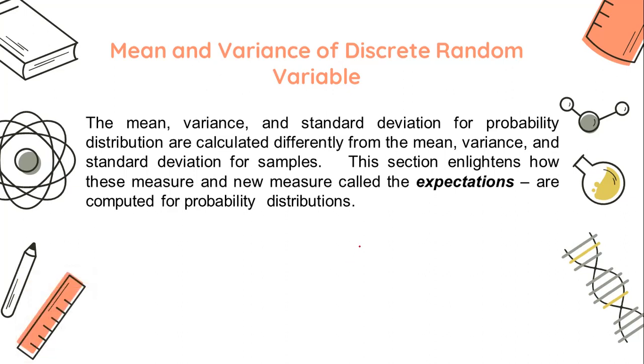Today, we're going to discuss the mean and variance of discrete random variables. The mean, variance, and standard deviation for a probability distribution are calculated differently from the mean, variance, and standard deviation for samples. This section enlightens how these measures and new measures, called the expectations, are computed for probability distributions.